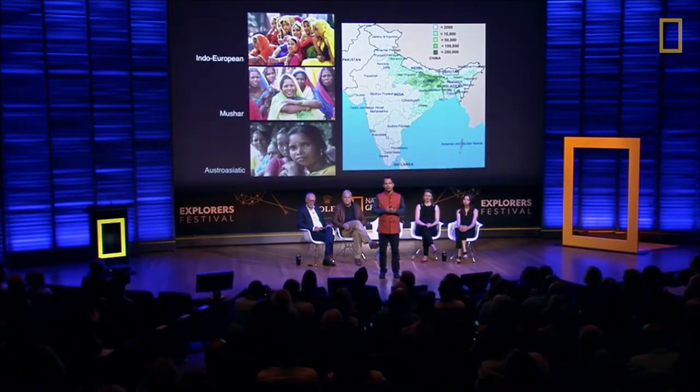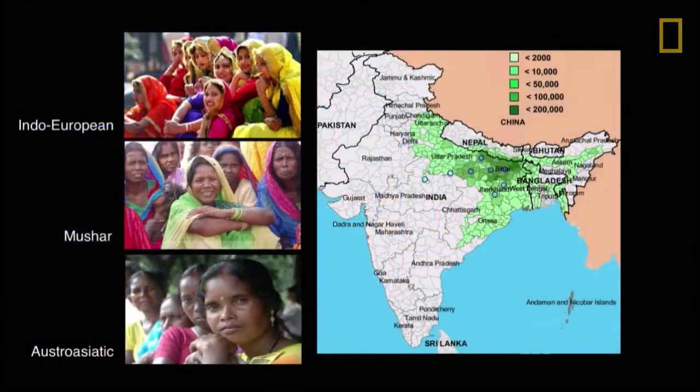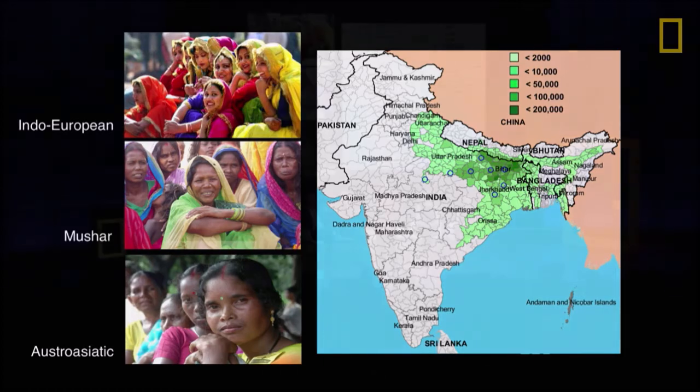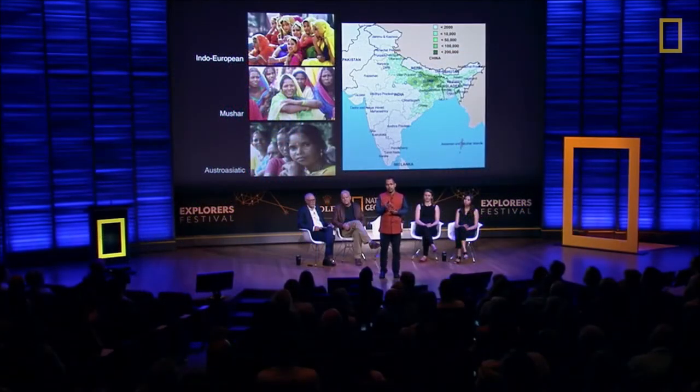We have a case study of a population called Mushar, present in the central and eastern part of India. The local meaning of Mushar is 'rat eaters.' These people are found in territory where Indo-European speakers are present, and they interact with them, sharing food and cultural things. But when we looked at their DNA, we found that surprisingly they share their DNA with a completely different population called Austro-Asiatics, who live around 1,000 to 1,500 kilometers away from them.